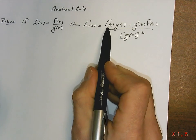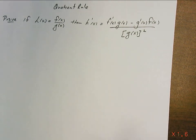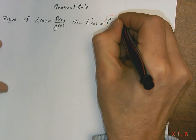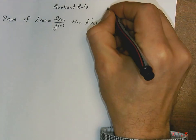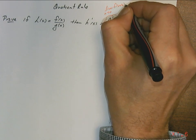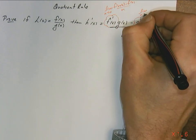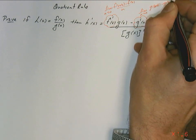Notice here there's an f prime and a g prime. So if I'm going to try to prove this from first principles without using anything else but the definition of the derivative, we're going to be looking for limits as h approaches 0 of f of x plus h minus f of x over h, and limits as h approaches 0 of g of x plus h minus g of x over h.